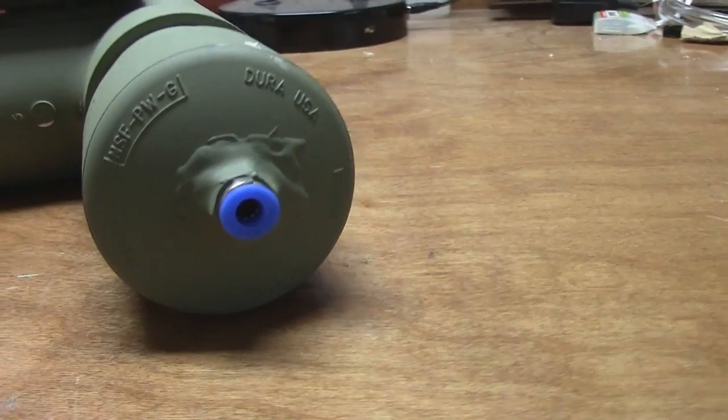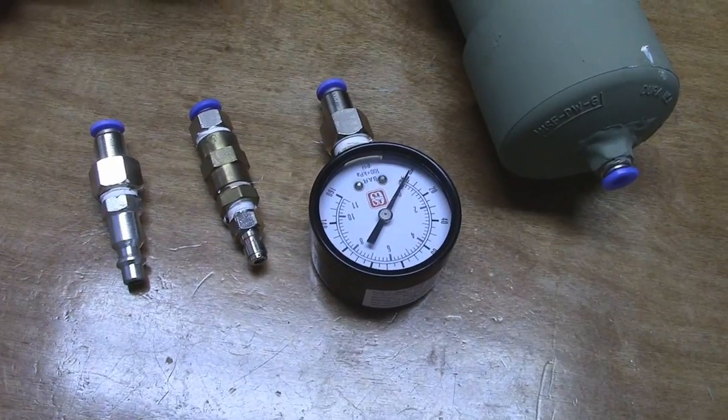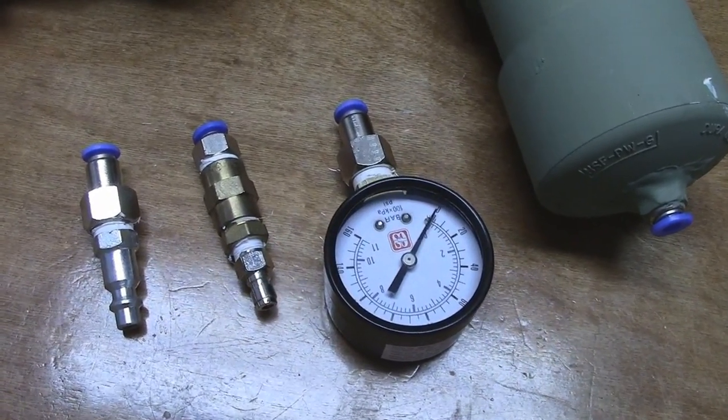On the other side is a quick disconnect fitting for 1 quarter inch vinyl tubing where we can connect various fittings like a pressure gauge or other fill fittings.